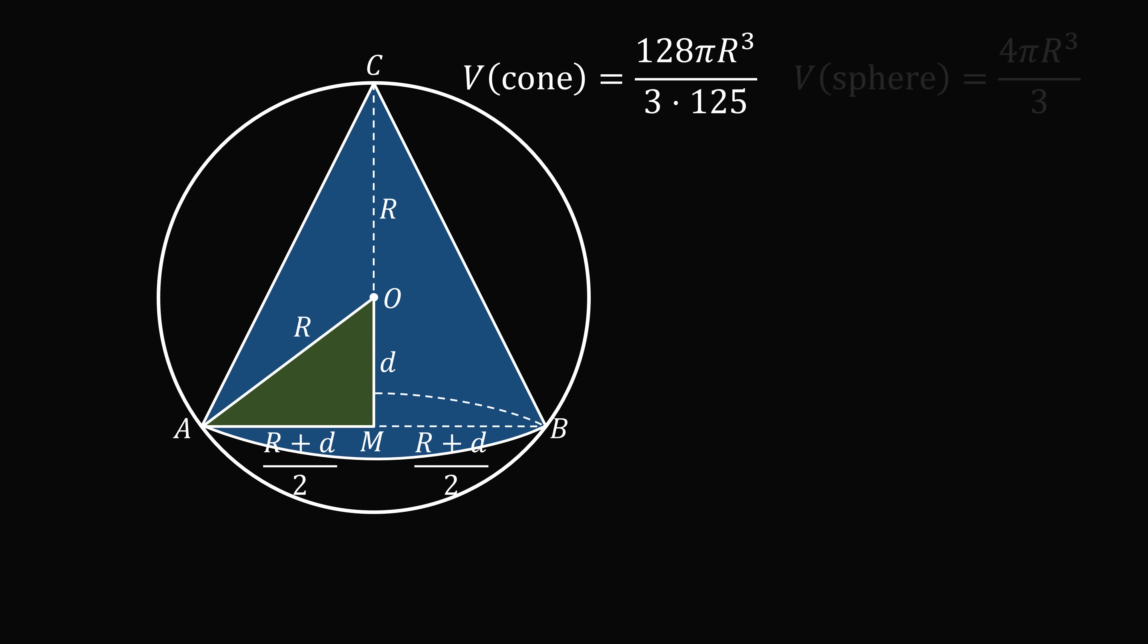Finally, we have the volume of the sphere is equal to 4 pi R cubed all over 3. So we take the volume of the cone divided by the volume of the sphere.